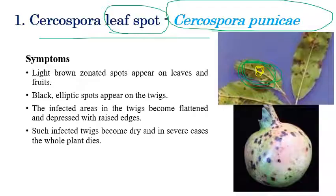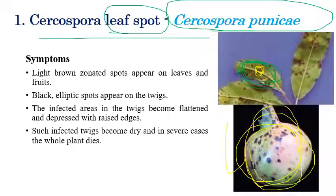The same spots can also be seen on twigs and fruits. The brown color spots on fruits later convert into black color. The infected areas show flattening and depressed or raised spots, which can be clearly observed at the edges. Symptoms can also be observed on the fruits.